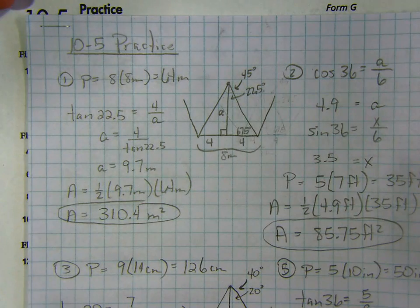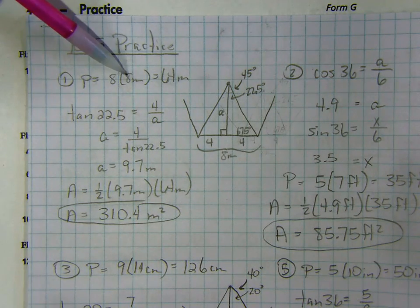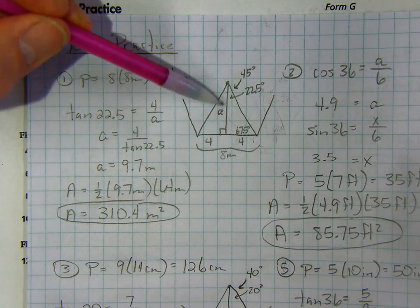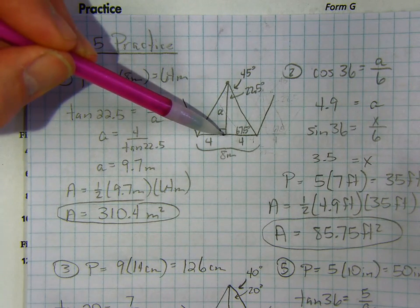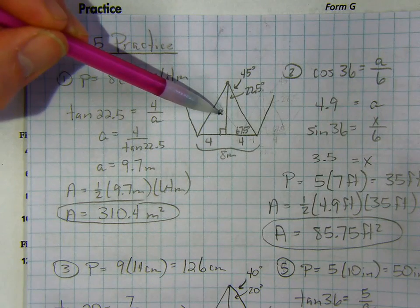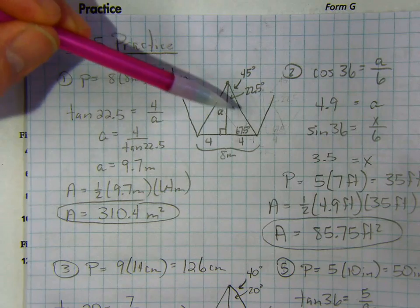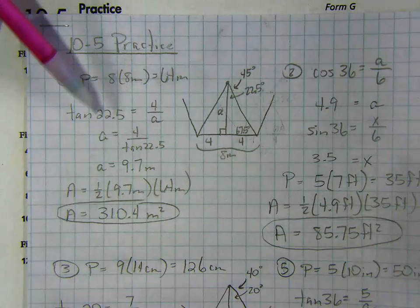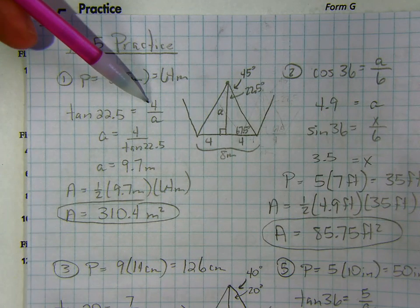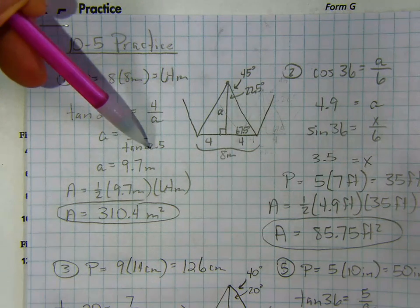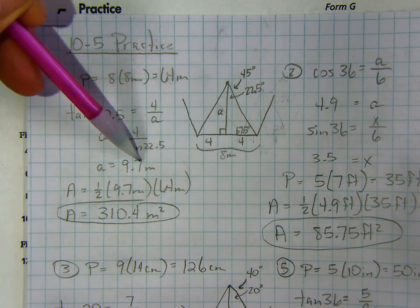See, I know the perimeter is going to be 8 times 8, which is 64 meters. To find the apothem, which is this side, from the center, perpendicular to one of the sides, the apothem, I'm going to use the tangent. The tangent of 22.5 is 4 over a. So a is equal to 4 divided by the tangent of 22.5, or 9.7. So there's the apothem.